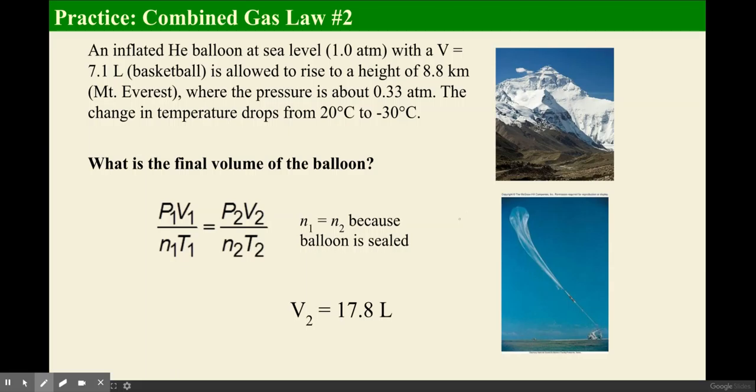That is the combined gas law. We see that it increases because as the pressure goes down, we know that's going to make the volume get bigger—that's Boyle's law. But at the same time, as the temperature decreases, that would make the volume decrease—that's Charles's law. Taking these together, we find that it goes up to 17.8 with both factors contributing to it.